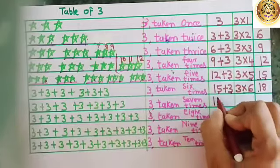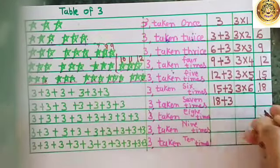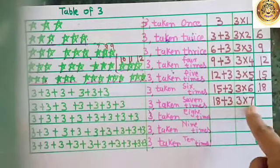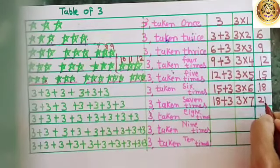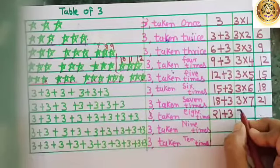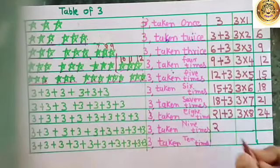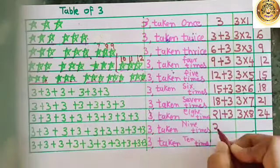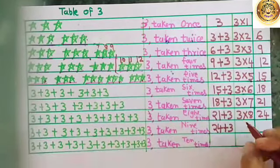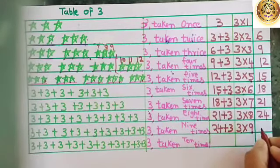Again, I take 18, the previous number in the 3 times table, and add 1 more 3 to it. How many times have I taken 3? 7 times. So 3 7s are 21. Here also, I will take 21 and add 3 more. Then 3 8s are 24. Again, taking the last number 24 and adding 3 one more time. I have added 3 nine times. So 3 9s are 27.